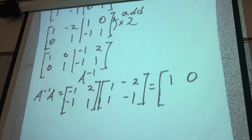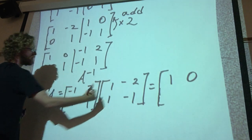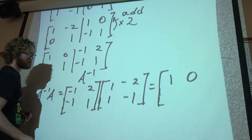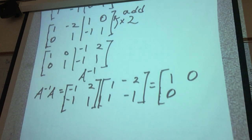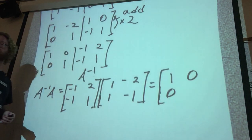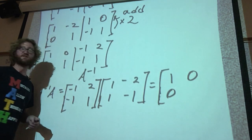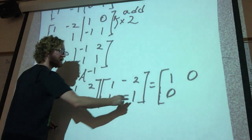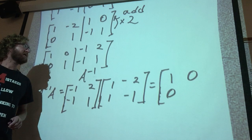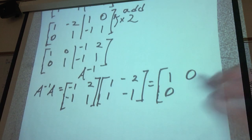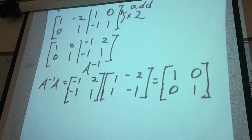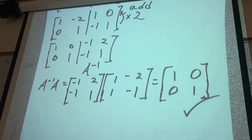And now for the last element, row two times column two: -1 times -2 gives positive 2, and 1 times -1 gives -1, so we have positive 2 and negative 1, and 2 minus 1 is 1. So we get [1, 0; 0, 1], and that is the identity matrix for a 2 by 2. So we did get the correct answer — we found what the inverse matrix is.